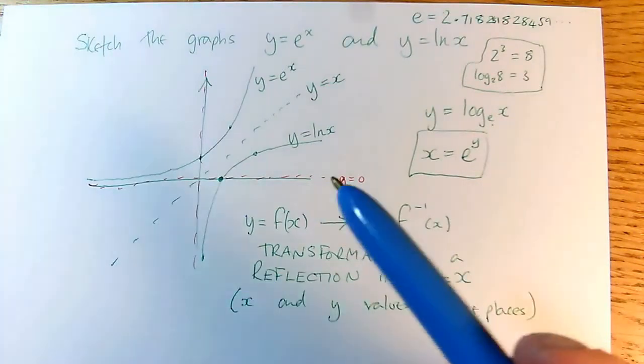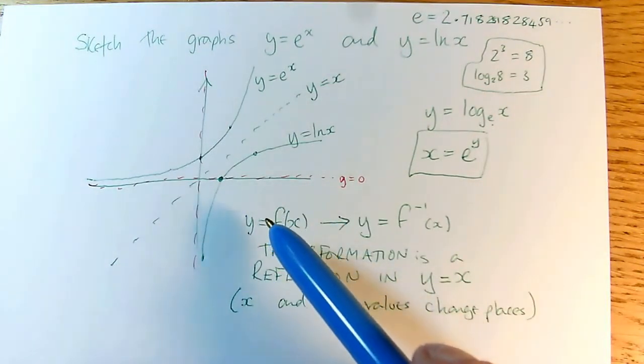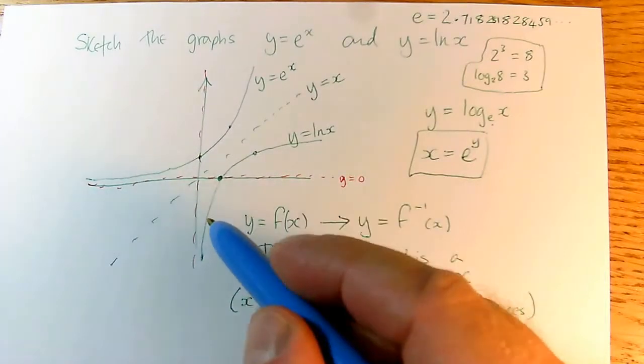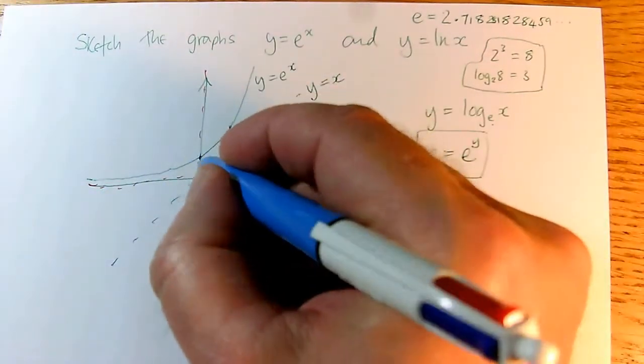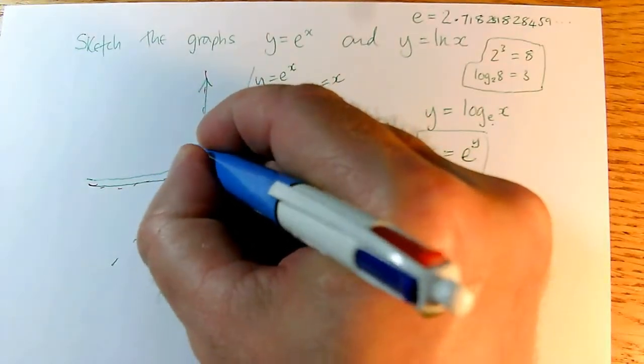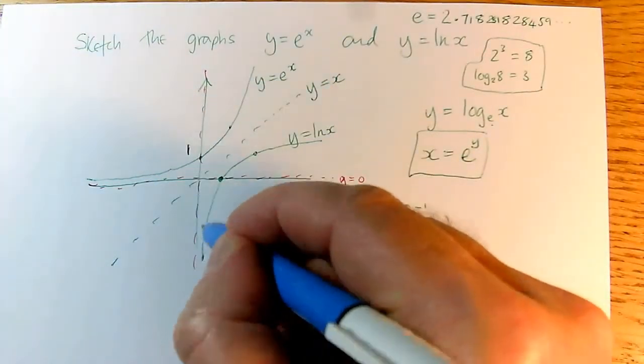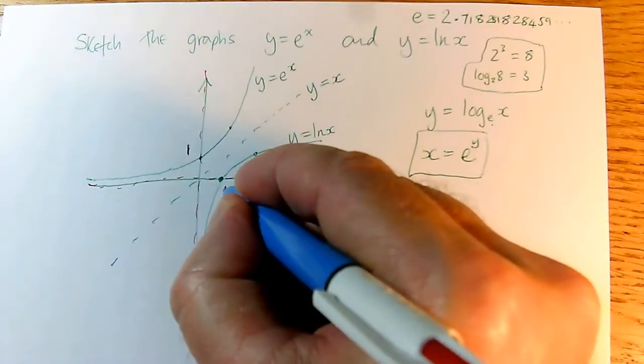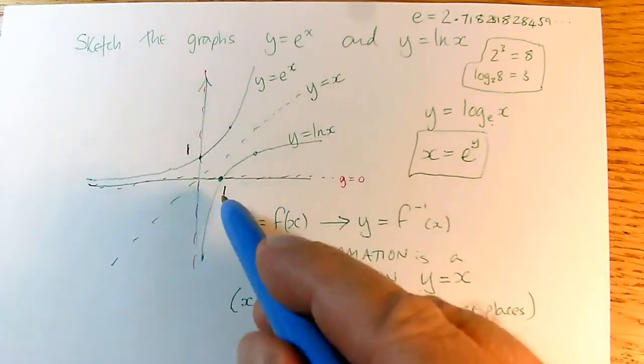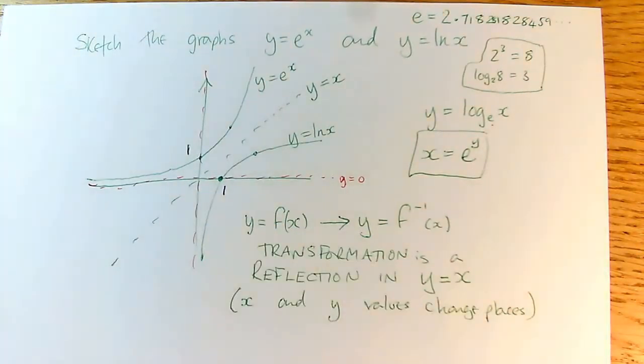And the last thing we need to do is we need to label the important points on these graphs. And you always label an intercept if you've got one. So we said that on the e to the x graph, when x is 0, y is 1. So this is the point 0, 1. And so on the log graph, which is a reflection of that, this is the point 1, 0. So the fact that y is 1 here and x is 1 there is something that you should always show on your graph.